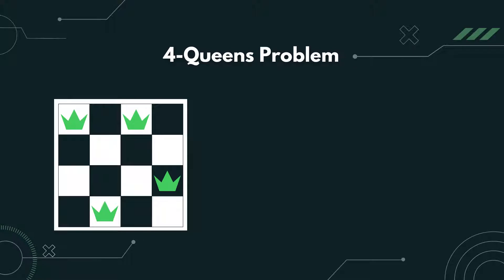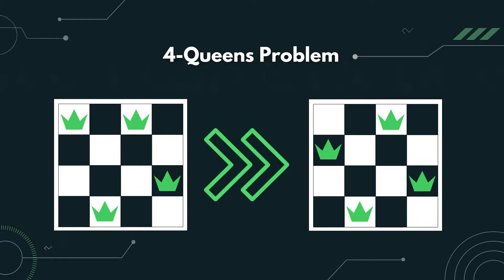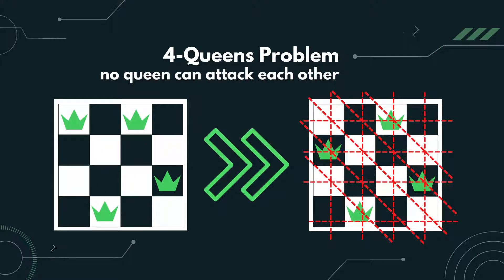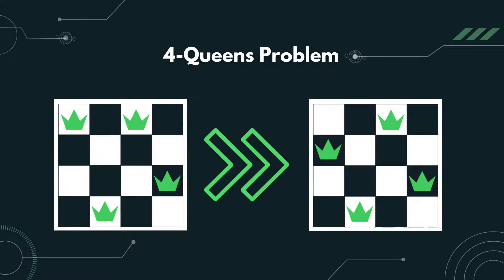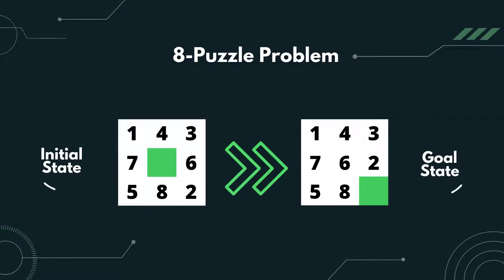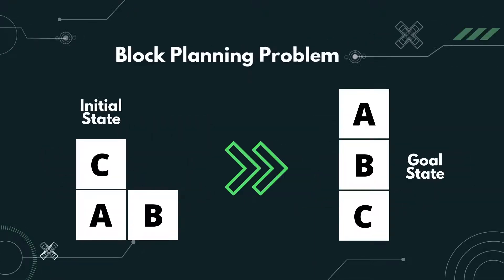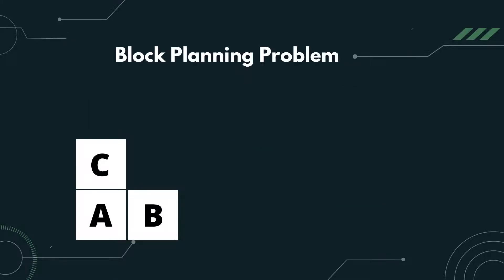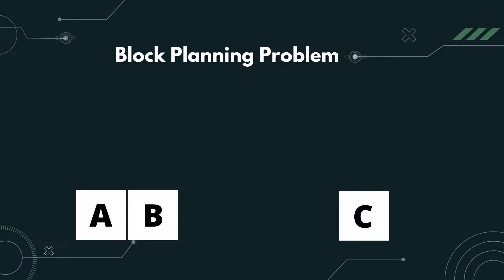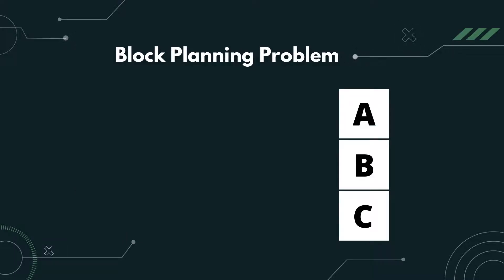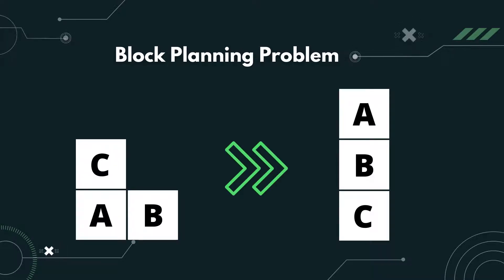This includes problems such as the 4 queens problem. If we move this queen downward, no queen can attack each other. This goal is much more important than the path to it. Another example is the 8-puzzle problem — we don't actually care how, but we must get to the goal state. Same goes for the block planning problem. What's important is that we need to get to the goal state by moving just one block at a time. The path just doesn't matter.